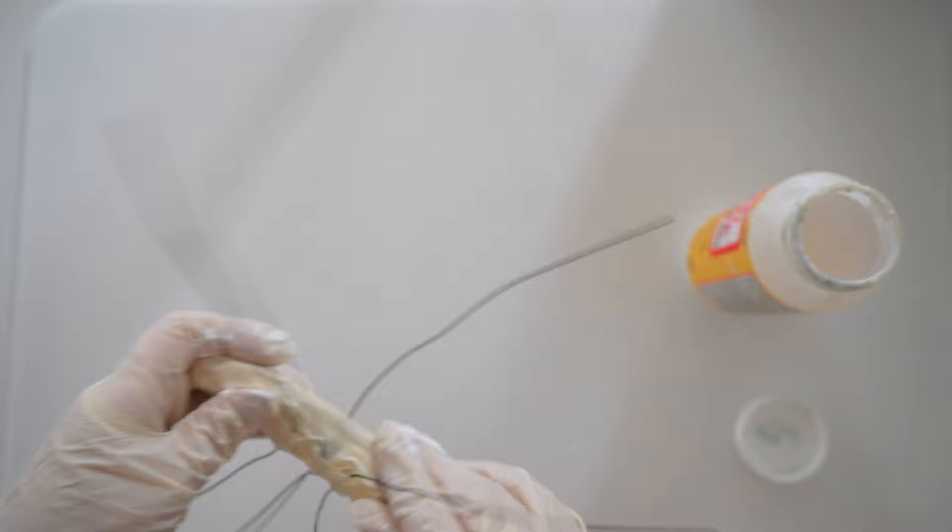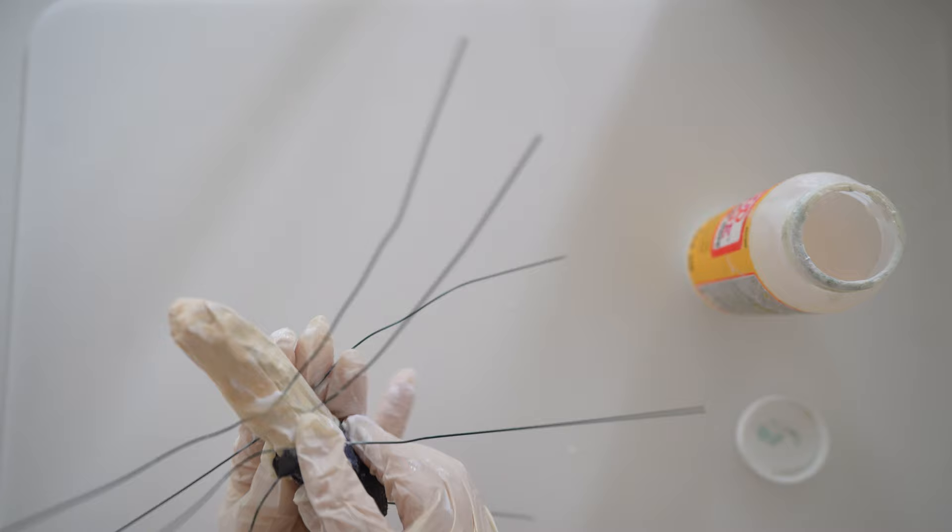Then get matte Mod Podge and cover the whole masking taped area. Then take black tissue paper and add that to the body. Make sure to add Mod Podge on top of the tape and on top of the black tissue paper.